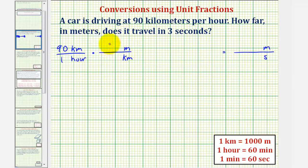And again, the conversion is that 1,000 meters equals one kilometer. Because these units are equal, this fraction is equal to one, but notice how the units of kilometers now simplifies out, leaving us with meters.